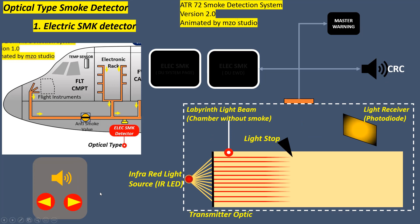Operating principle of the optical smoke detector: the smoke detection is based on the scattered light principle. The heart of the smoke detector is the optical measurement chamber, which screens external parasite light but optimally detects light-colored and dark smoke particles.